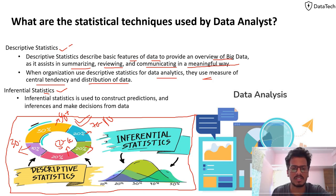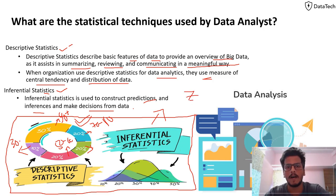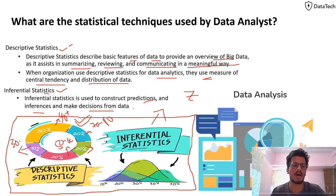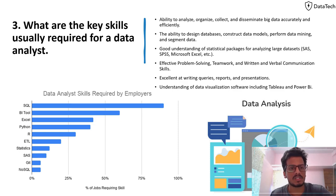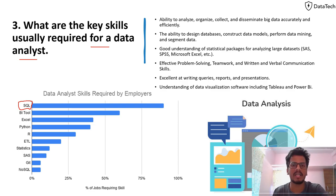Inferential statistics is used to construct predictions, inferences, and make decisions from the data. It involves z-scores and similar techniques. This is majorly used by data scientists, so you don't have to dig too deep into it if you're going for a data analyst role, but you should know about it. For example, in descriptive statistics you might find that 30 percent of students scored 90-plus marks — that kind of summary.